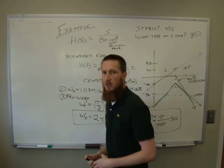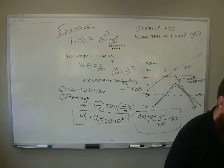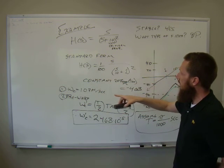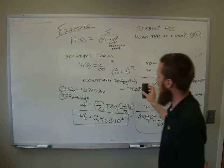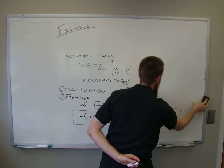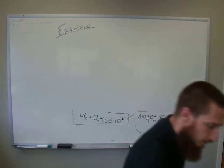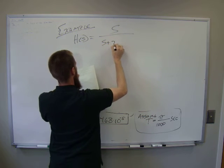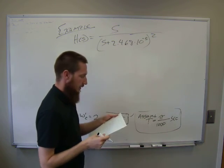We have this new knee frequency, so now we go back and redesign the filter with it. The S in the numerator stays the same. Therefore H of S redesigned is equal to S divided by S plus 2.468 times ten to the minus five, all squared. That warps the frequencies around. Now we apply the bilinear transform.